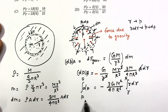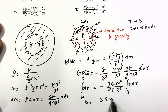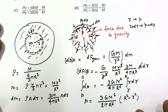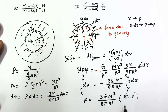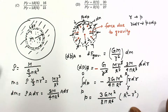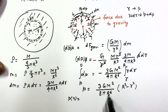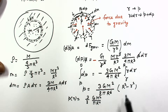On integrating the expression, you get the final result: p(r) = 3G·M² / (8π·R⁶) × (R² − r²). This can also be written as p(r) = (3G·M² / 8π·R⁴) × (1 − r²/R²). This is the answer for the pressure at distance r from the center.